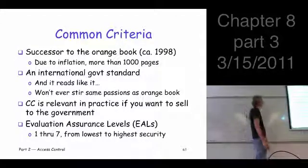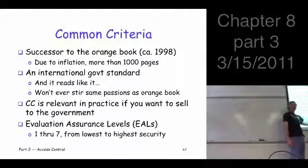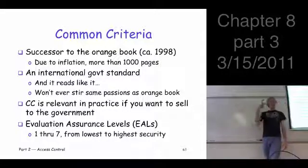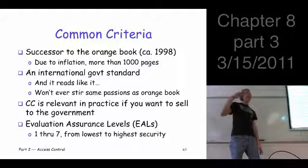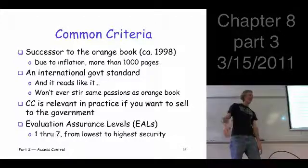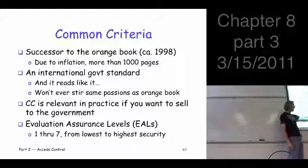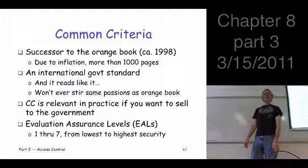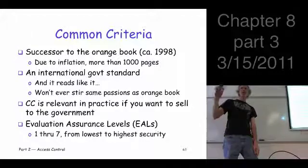And it is relevant today if you do want to sell to the government. There's a certain level that you need to meet to sell to the U.S. government for almost anything. For higher, if you want your product to be used for classified military sorts of things, then higher levels would apply. Now, the levels, they call these Evaluation Assurance Levels, EALs, and they go from 1 through 7. So 1 being the lowest, 7 being the highest.